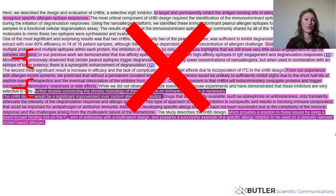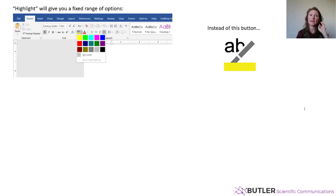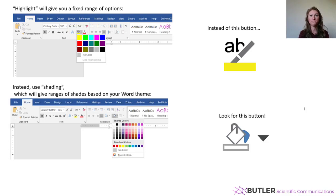If you want to try this exercise yourself, here's one last tip: do not use the highlight button. The highlight button gives you a very fixed range of colors and you can't show that scope building from it. Instead, look for the shade button — when you click on it, it gives you a range of theme colors. That's exactly what I did for coloring the discussion: I started at the lightest color for the lightest scope and moved up from there. I recommend trying this exercise on your discussion, seeing what it looks like, modifying it to change the flow, and noticing what you're already doing that you didn't even realize.